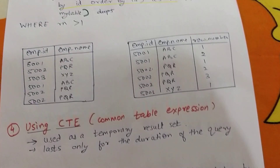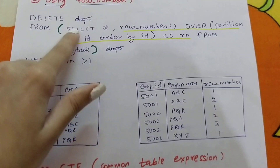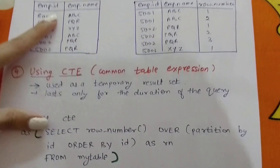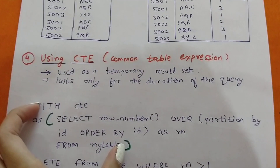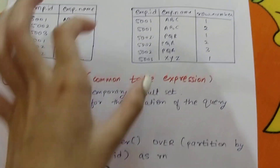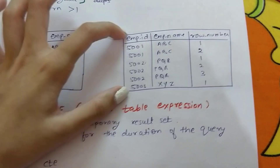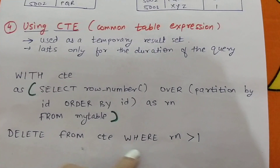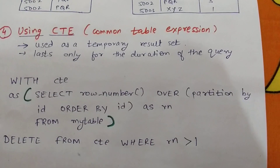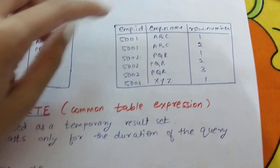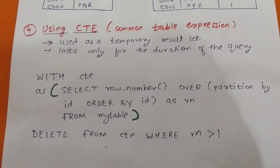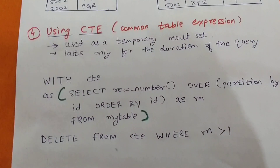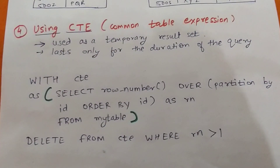The inner query inside the CTE is the same as what was written in the ROW_NUMBER method. The CTE basically returns that same table with the rn column. Then we write: DELETE FROM cte WHERE rn > 1. Wherever rn is greater than 1 it will be deleted. This is very similar to the above query. Thank you for watching.